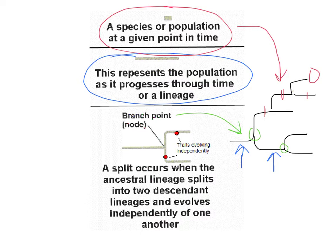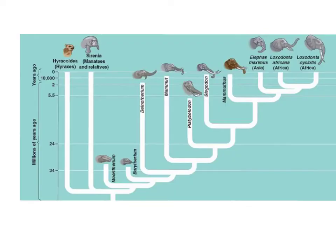These nodes are important because you'll be asked to both read and interpret cladograms, and also construct one yourselves — we'll practice that at the end of this lesson. Here is an example phylogenetic tree using elephants.